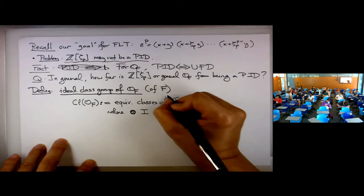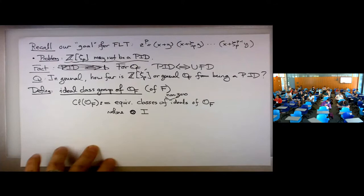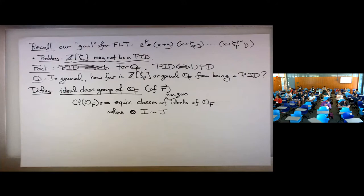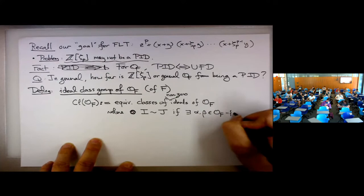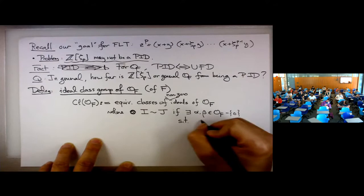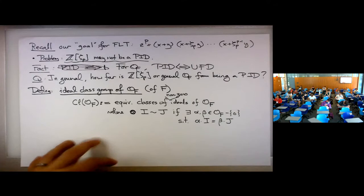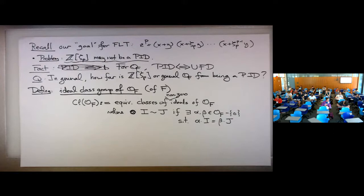We work with non-zero ideals — zero is always a bit different. We say two ideals I and J are equivalent if you can find two nonzero numbers α and β in the ring of integers such that α·I = β·J.